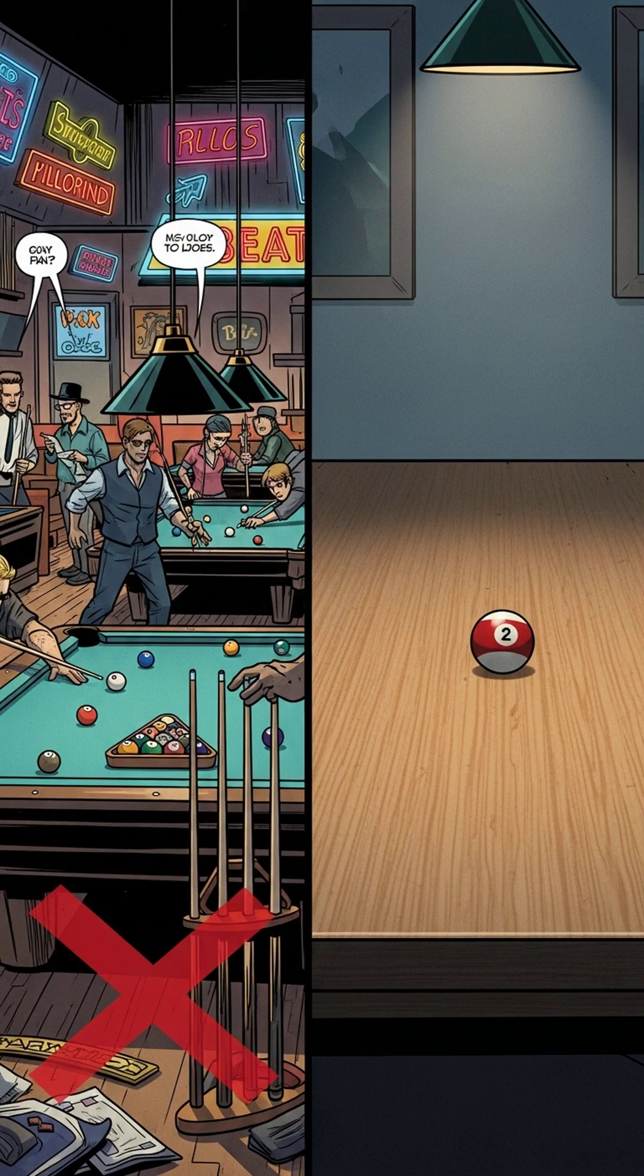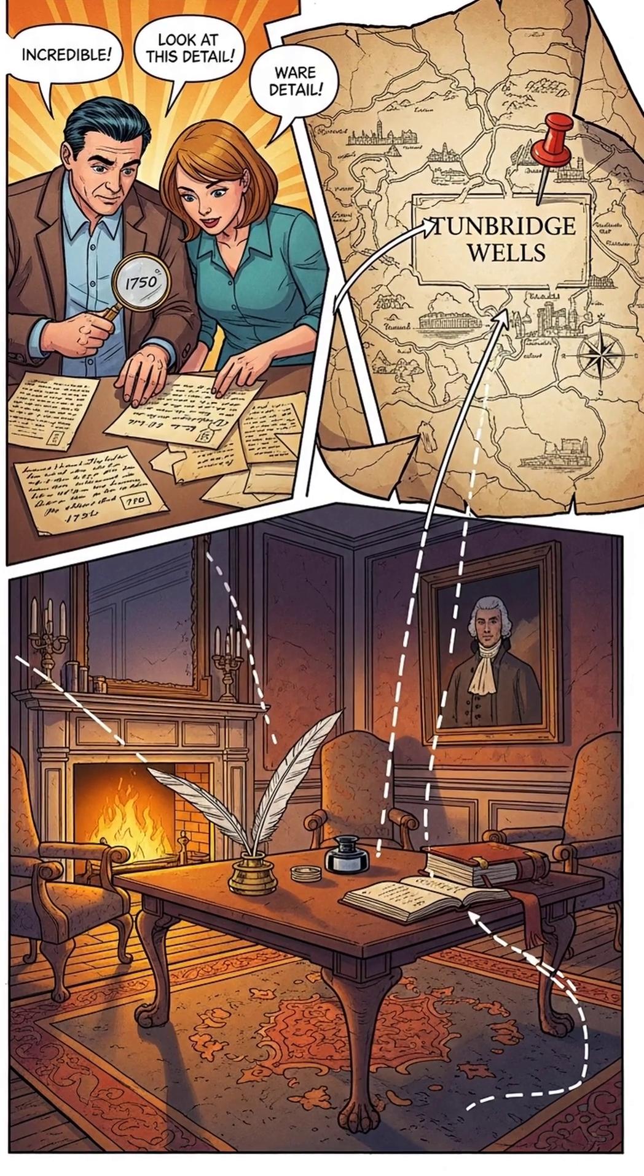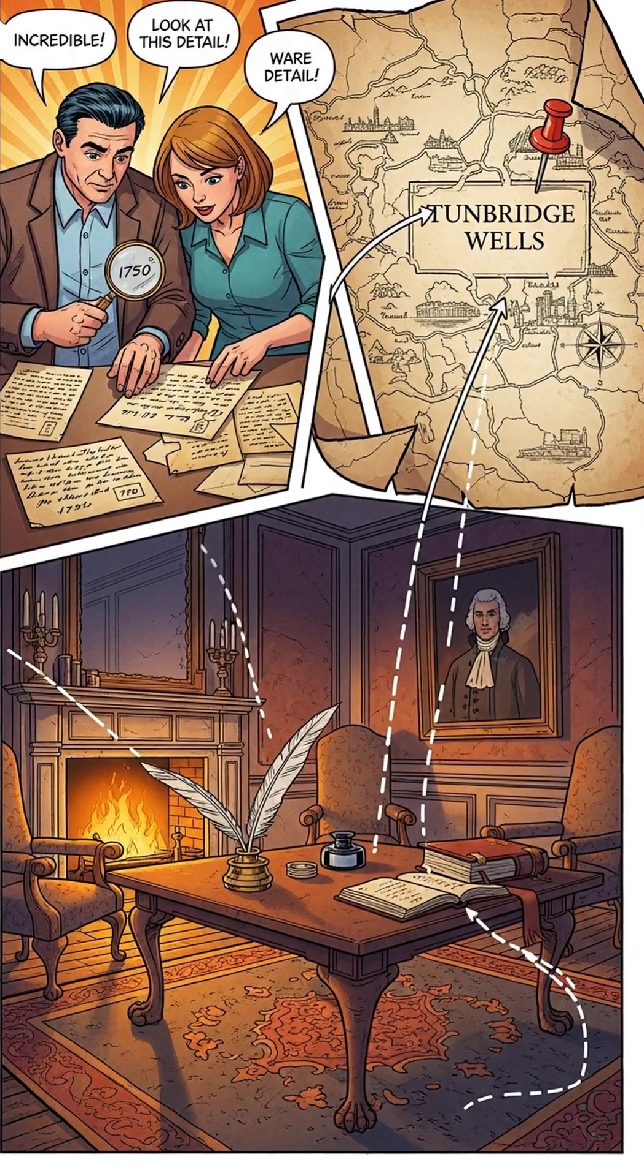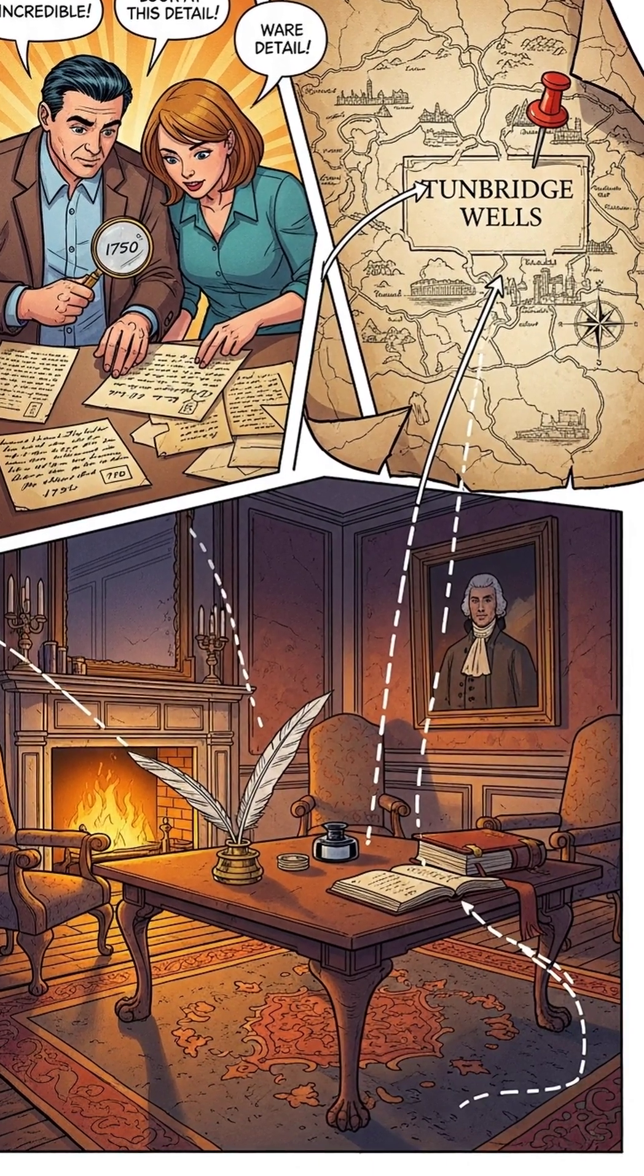Here's the weird part. People often call it a billiard table story. In Bayes' actual essay, it's just a table with a ball tossed at random. No cues. No pool hall. Later writers added the billiards flavor. And recent historians dug into Bayes' life and even point to a real table setting in Tunbridge Wells that could have inspired the example.